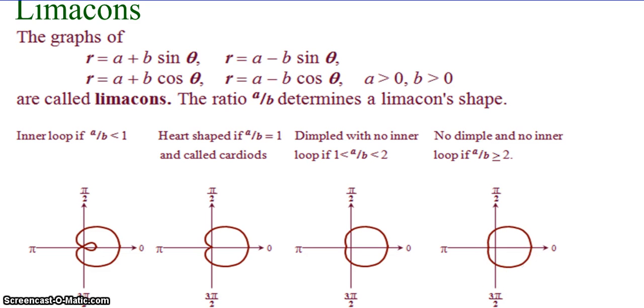So, these are our different scenarios. All of these pictured here would be examples of cosine because they're symmetrical to the polar axis. The sine curves would look the same, but they would be symmetrical to the line theta equals pi halves.